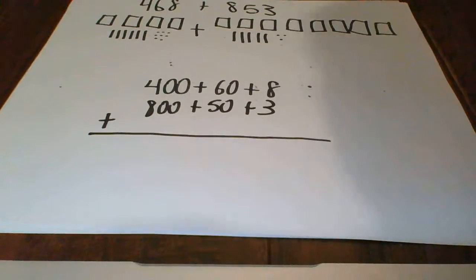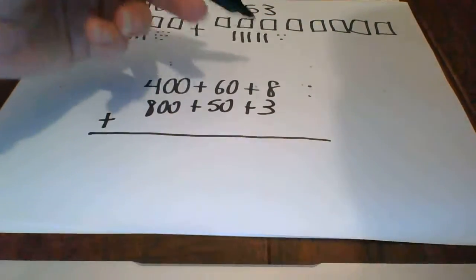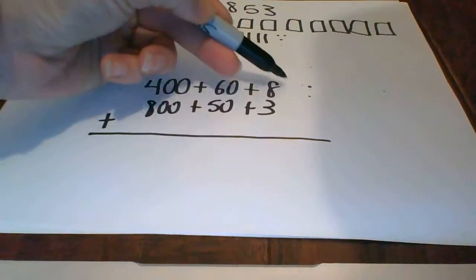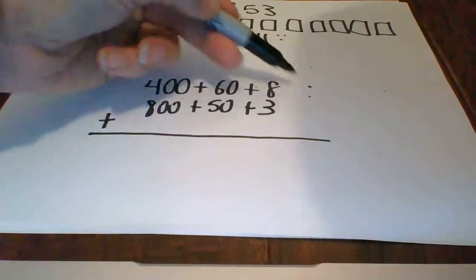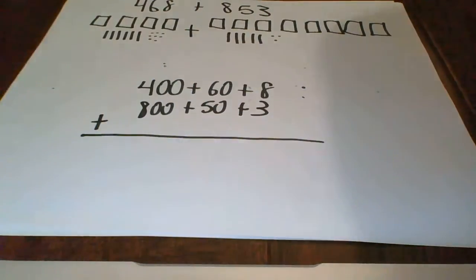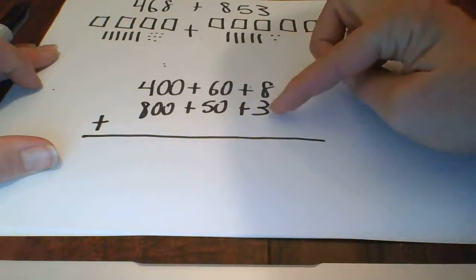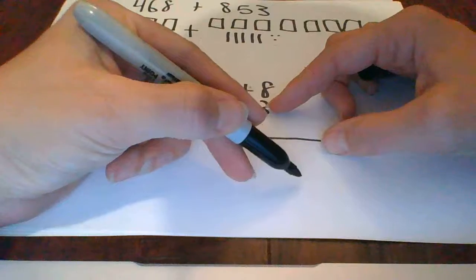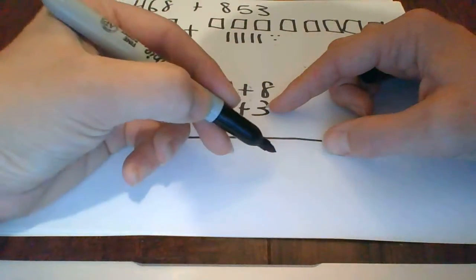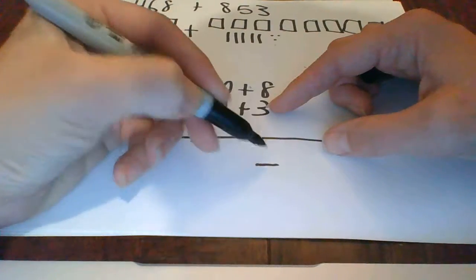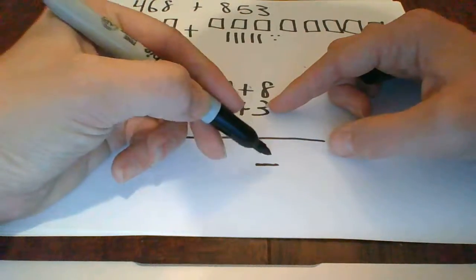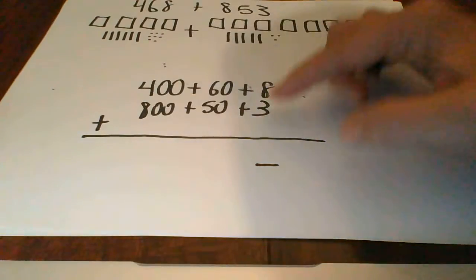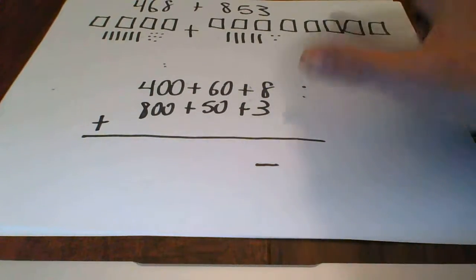When we add, we always want to start in the ones place, because if you get a digit that is greater than 9, like we know, like 8 plus 3 is 11, I cannot put 11 down here. That's not how we want to add. We want to be adding like things, so only one digit. So no digit greater than 9 can actually go here. We're not going to be bringing it down.